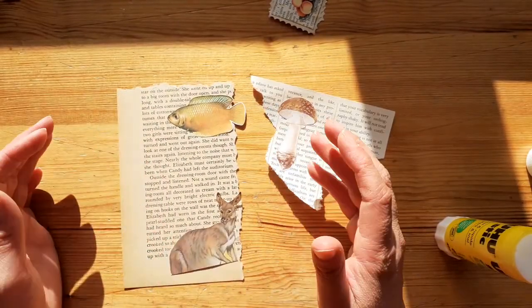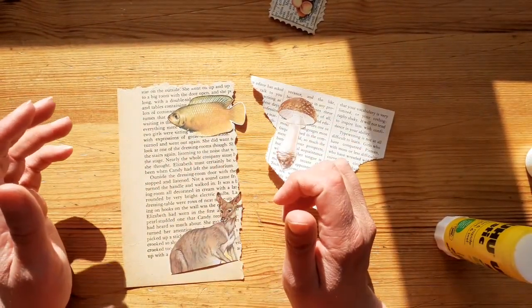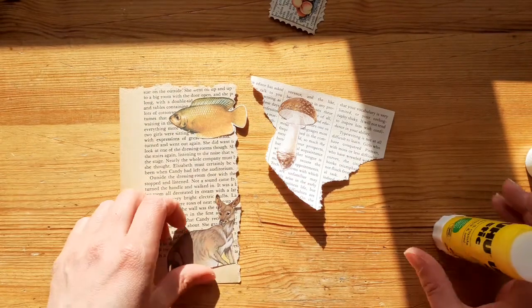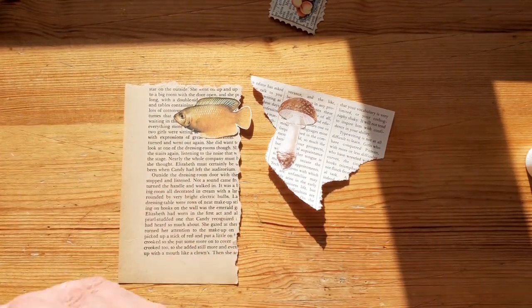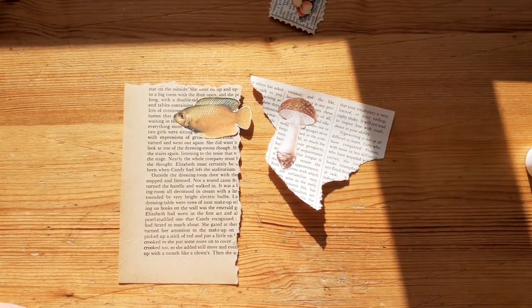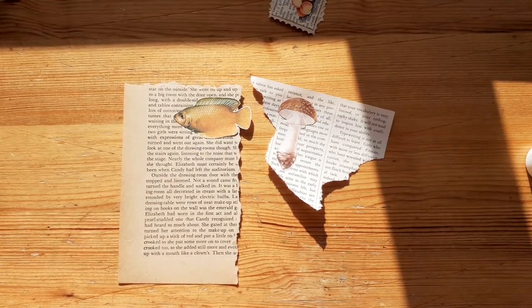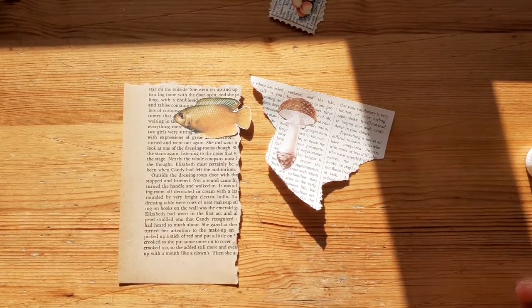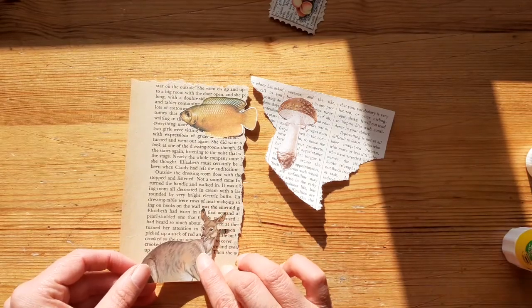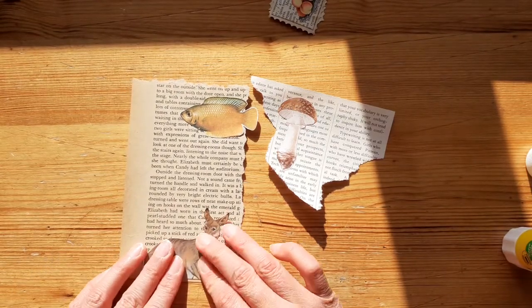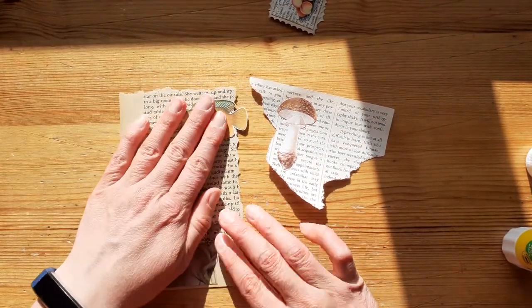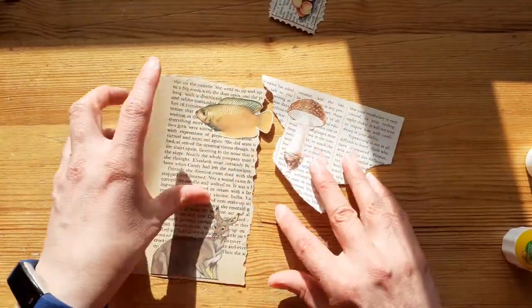Now I would recommend if you can, proofreading your sheets, just because I once did a really pretty stamp with a very elegant lady on it and the word balls was really clearly next to her face. So yeah, just something to bear in mind that you might want to do that and just read through it. So those are stuck down for now.